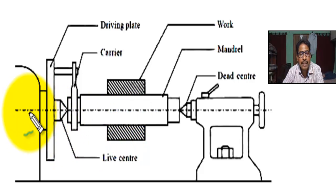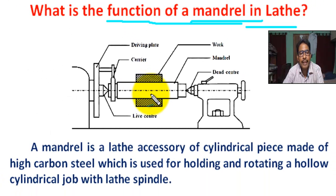The motion of main spindle is transferred to mandrel with the help of this driving plate or catch plate, from this to lathe dog and finally to the mandrel. On the mandrel, the job is rotated.